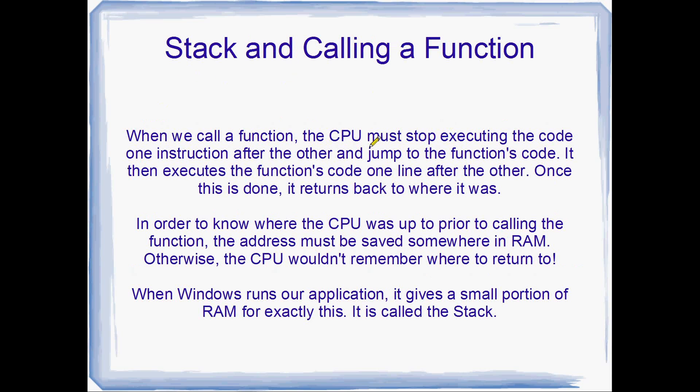So when we call a function, the CPU has to stop executing instructions one after the other and jump to the function's code, then execute that code one line after another. Once it's finished, it has to return back to where it was before it called the function. In order to know where the CPU was up to prior to calling the function, the address has to be saved somewhere in RAM — that's the address of the instruction it was up to before it called the function. Otherwise the CPU won't know where to go back to. So when Windows runs our application it gives us a little bit of RAM called the stack, and it's the stack that it uses to save this return address.